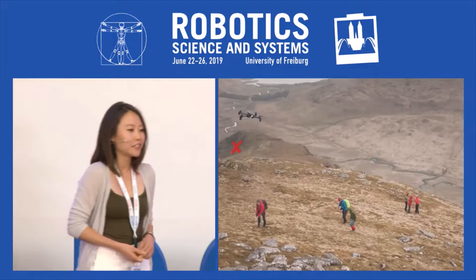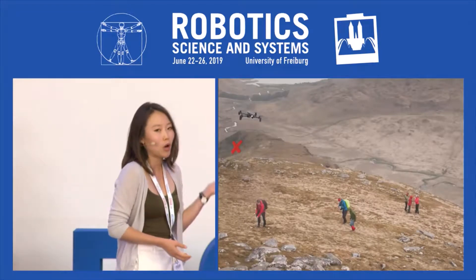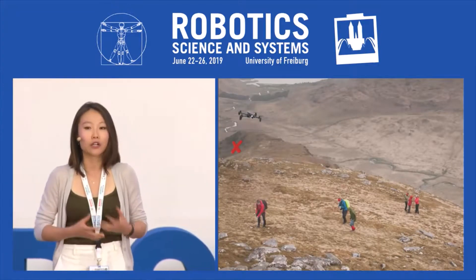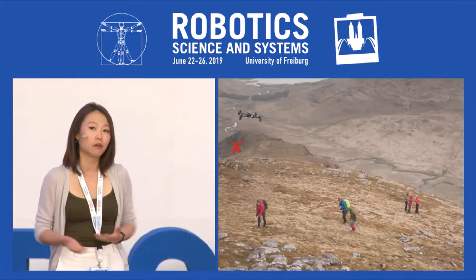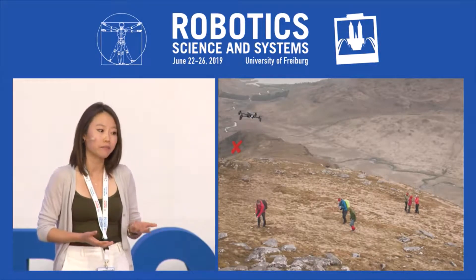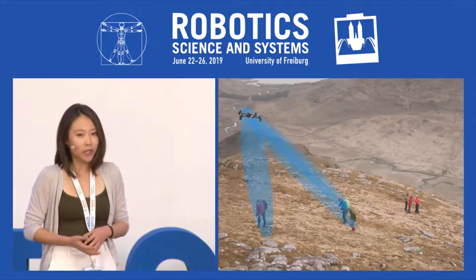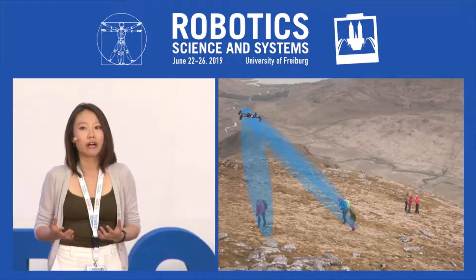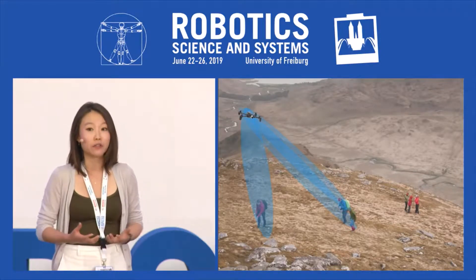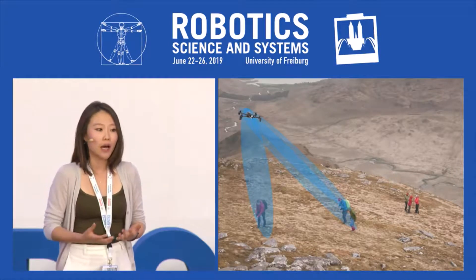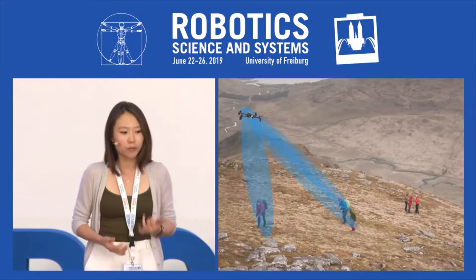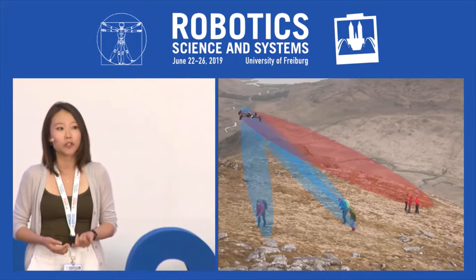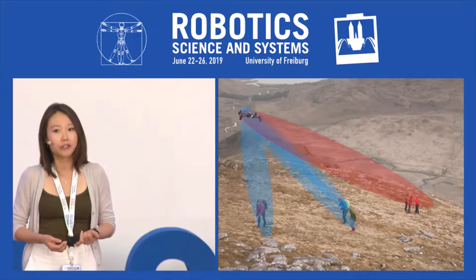For instance, what if a quadrotor wanted to lead these humans on a different path than they were originally on? Normally, it would have to consider one-on-one interactions with all of these humans. However, this approach is not really scalable with larger numbers of agents.